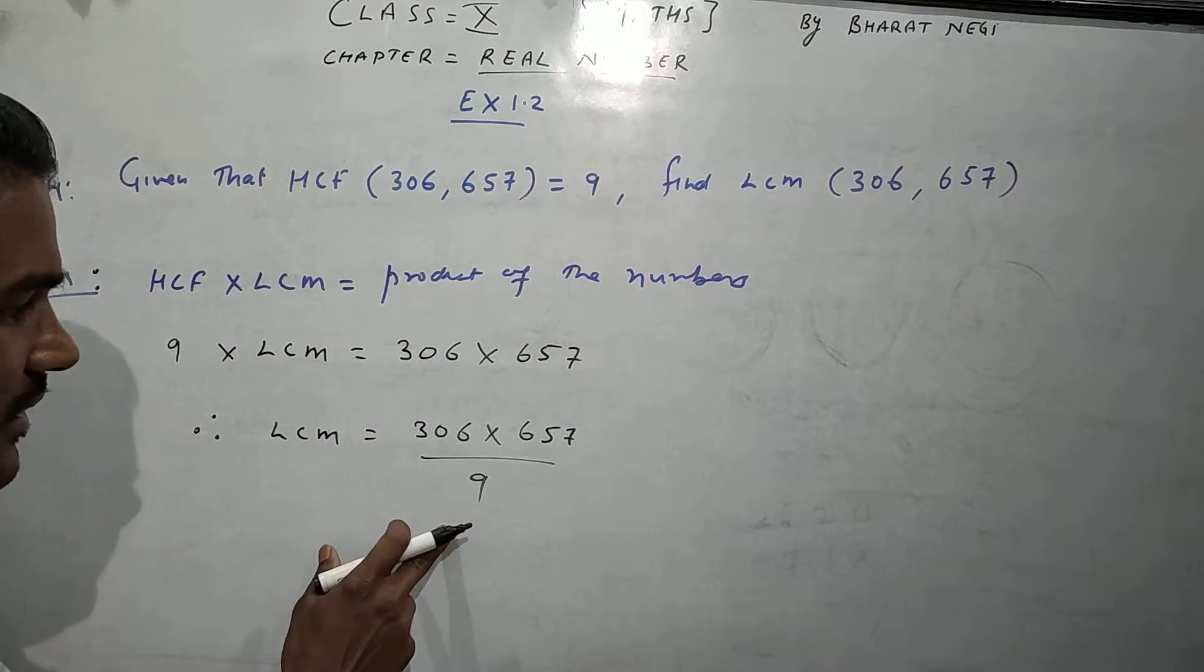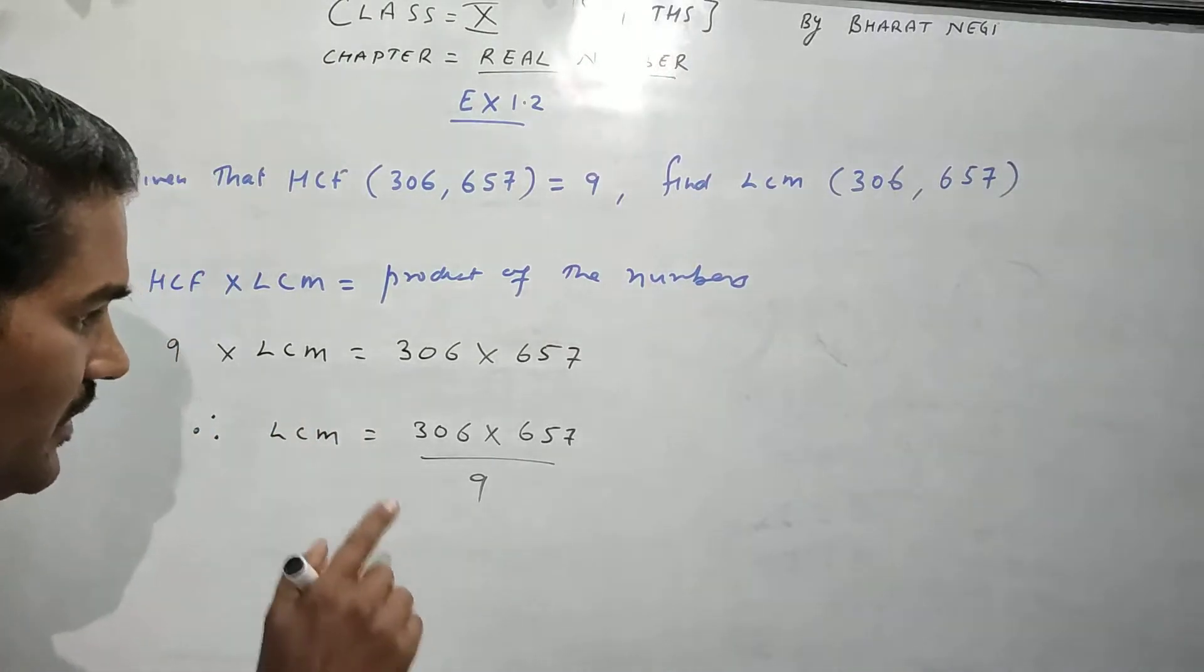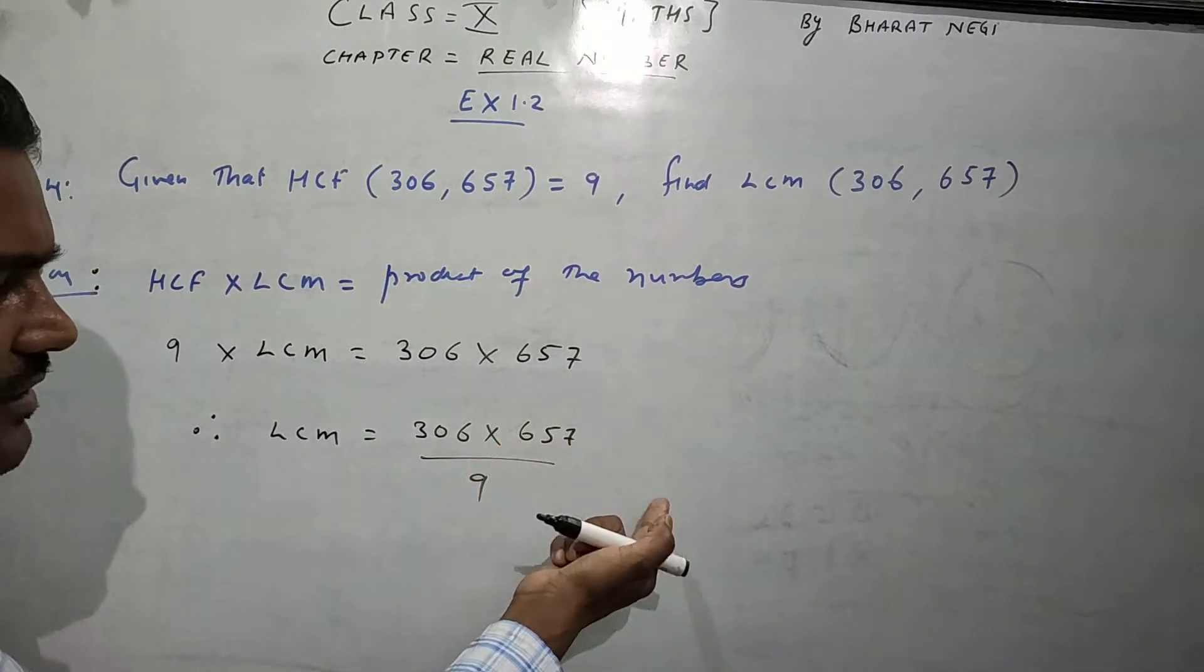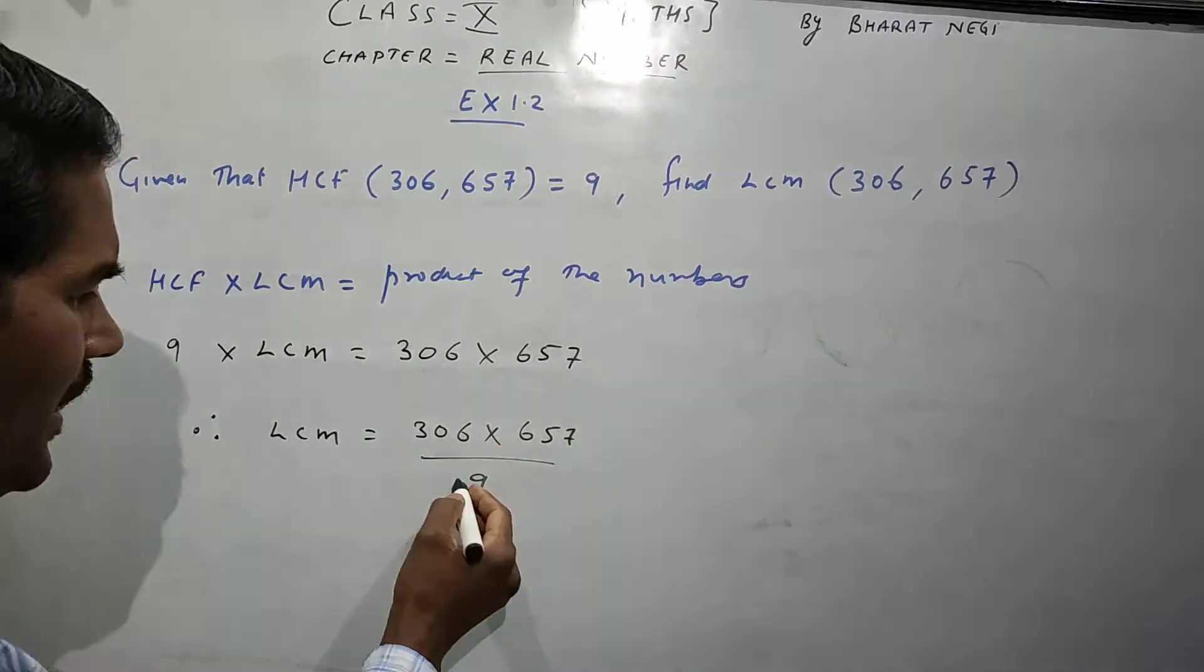Now, we have to check that it is divisible by 9. We will use the test of divisibility. 3 plus 0 plus 6 is 9. 6 plus 5 plus 7 is 18. Both numbers are divisible. So, we can do this.